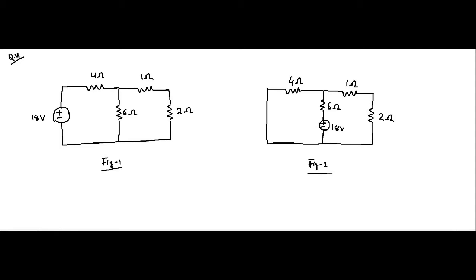We have two circuits and the only difference between them is that the position of the 18 volt voltage source is shifted. In the first figure, the 18 volt voltage source is present in the first branch; in the second figure, it is present in the second branch. To prove the reciprocity theorem we have to determine the branch currents, and if both of them are equal then the reciprocity theorem is valid.